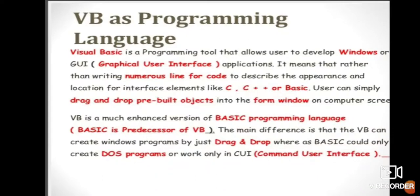Rather than writing numerous lines of code to describe the appearance and location of interface elements like C, C++, or BASIC, through VB users can simply drag and draw objects into the form windows or computer screen. VB is an enhanced version of BASIC programming language. The main difference is that VB can create Windows programs by just drag and drop, where BASIC could only create DOS programs or work only in a character user interface.